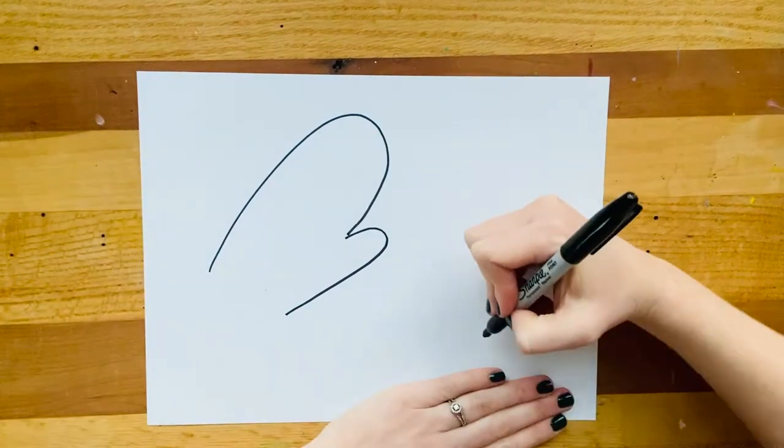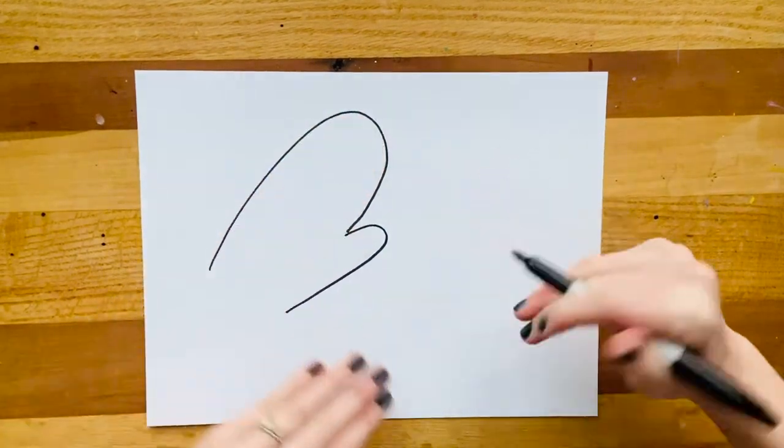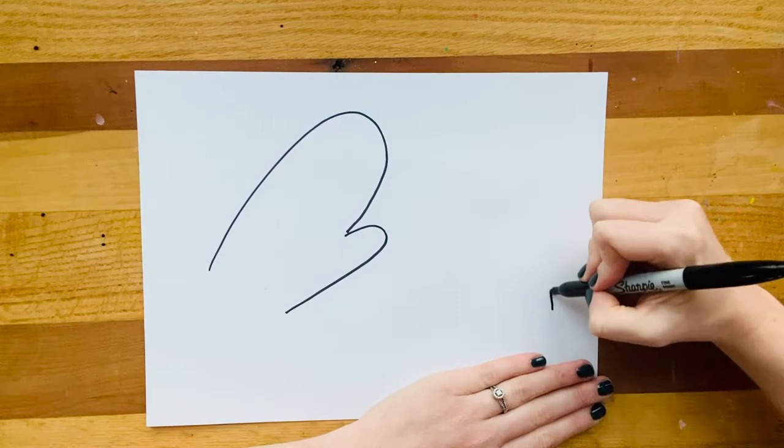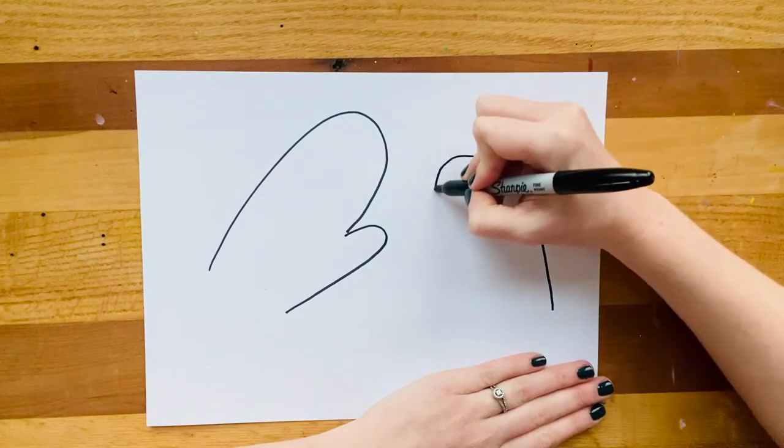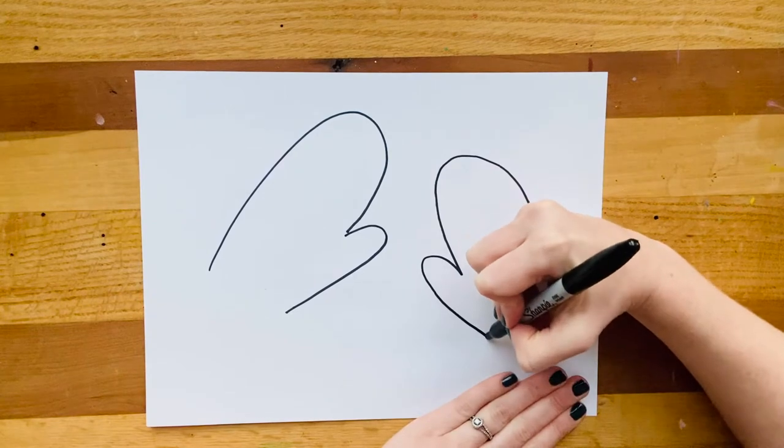Again, we're going to do this on the other side, but opposite. Because as we know, when we wear mittens, we have one on one hand and one on the other. So I'm going to come up tall for the big part of my mitten, and then I'm going to make a smaller little J for the thumb.